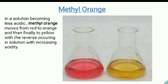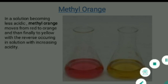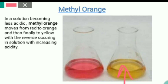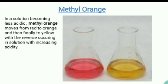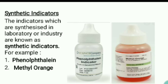Next, talking about methyl orange. Methyl orange is a solution that basically moves from red to orange and then finally to yellow. It will turn yellow when it is acidic in nature, and it will turn red when it is basic in nature — so the more acidic the solution, the more it moves from orange to yellow. The two tubes you can see on the screen are examples of synthetic indicators: phenolphthalein and methyl orange.